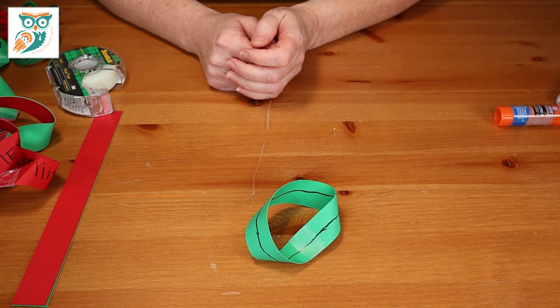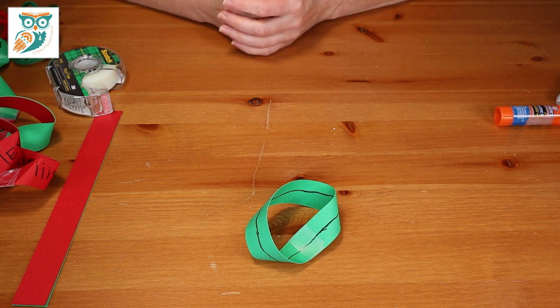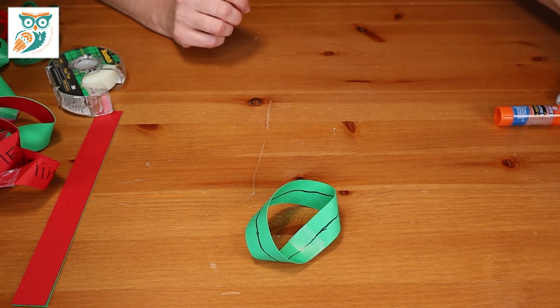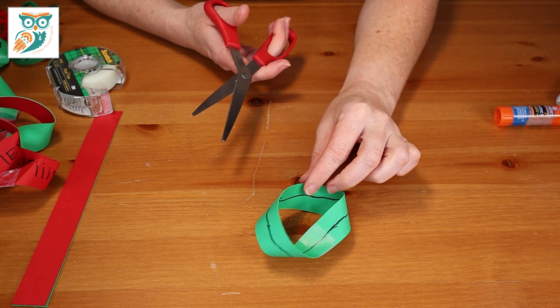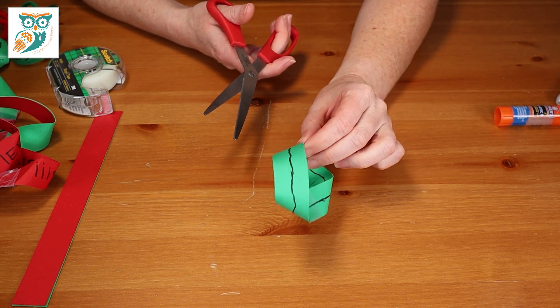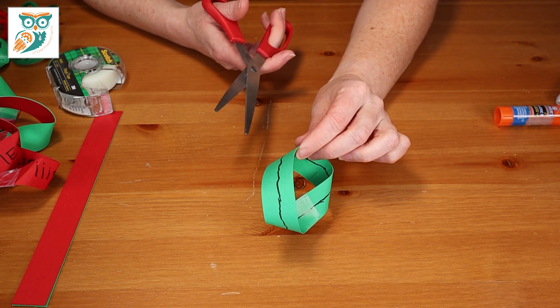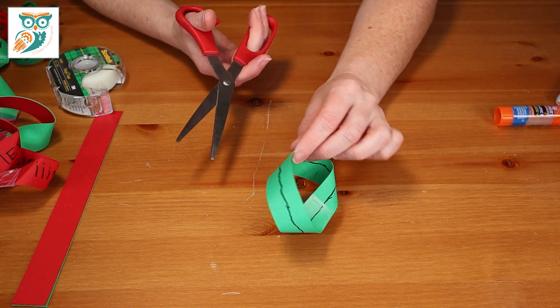Another really fascinating thing you can show your kids with the Mobius Strip before you make your Christmas or holiday decorations is to take some scissors and now cut along that line. Now, if you ask your kids what's going to happen if you cut it in half, what are they going to say? You're going to end up with two pieces.